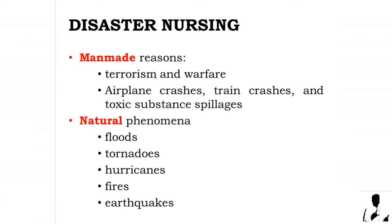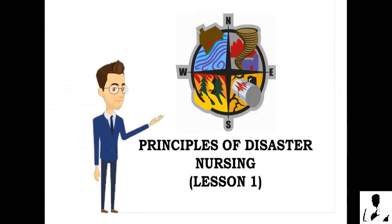Airplane crashes, train crashes, and toxic substance spillages are other man-made disasters that can result in casualties and tax the resources of health care facilities and their communities. In addition to man-made disasters, natural phenomena such as floods, tornadoes, hurricanes, fires, and earthquakes kill and injure hundreds of thousands of people worldwide each year. The acute care facility must be prepared for any and all of these disasters.